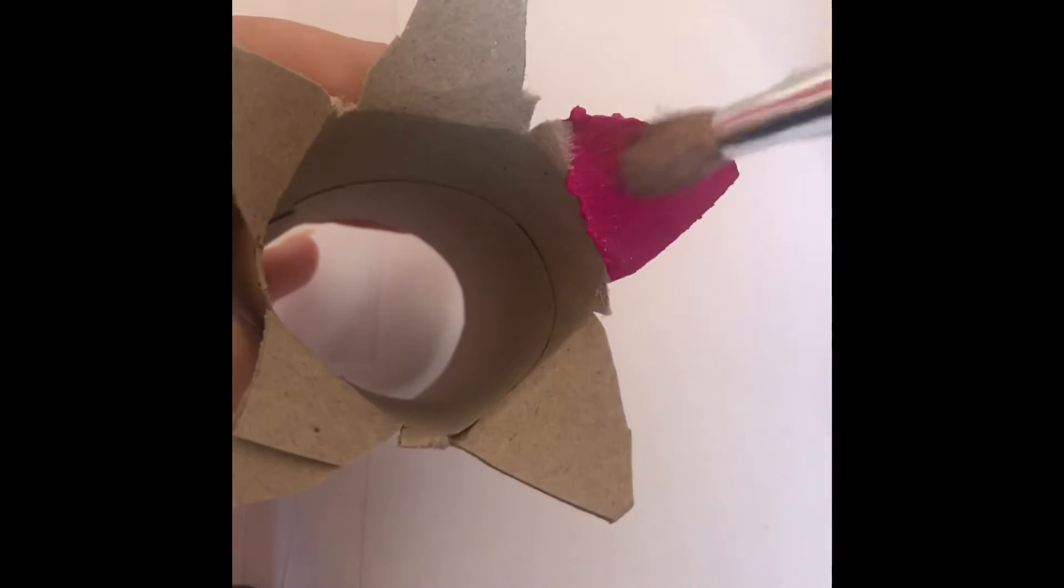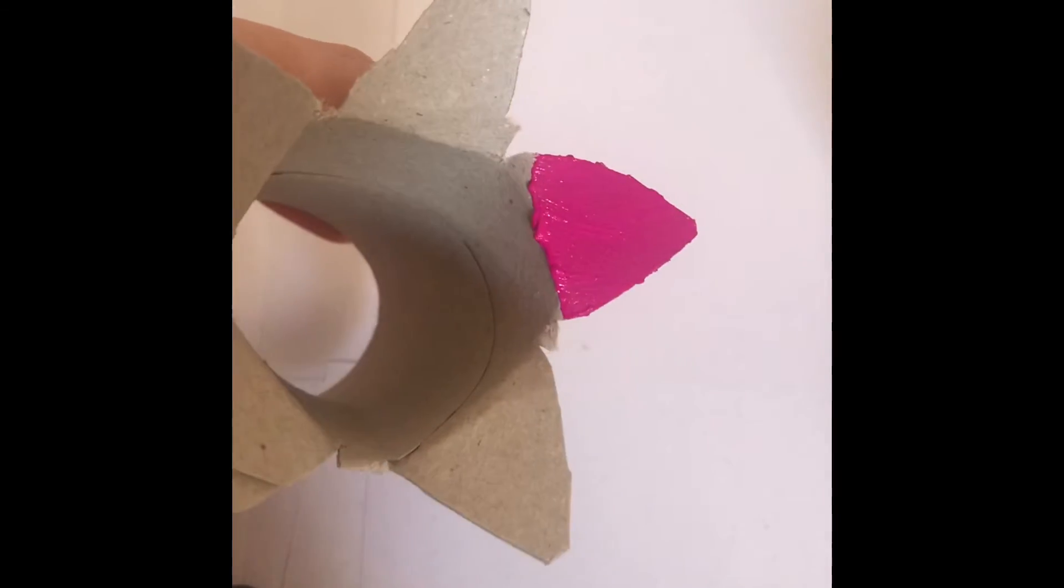So you have a flower shape, and then what you'll need to do is either put the toilet roll in the paint, let your little one put it in the paint, or get them to paint it on. You can assist and do the same for your fringe toilet roll holder.